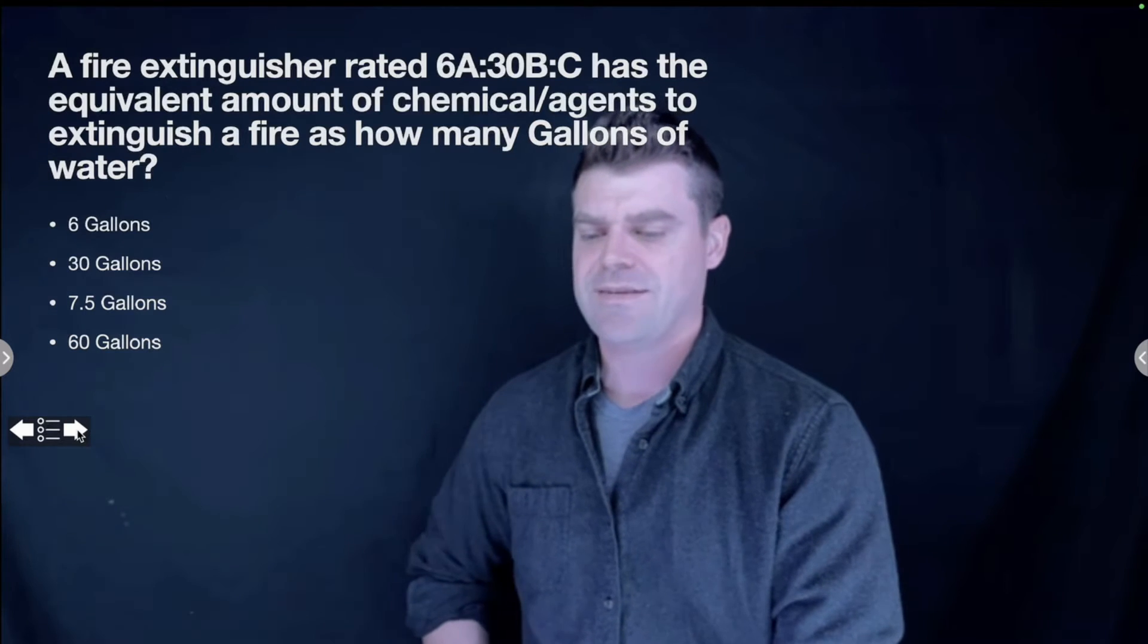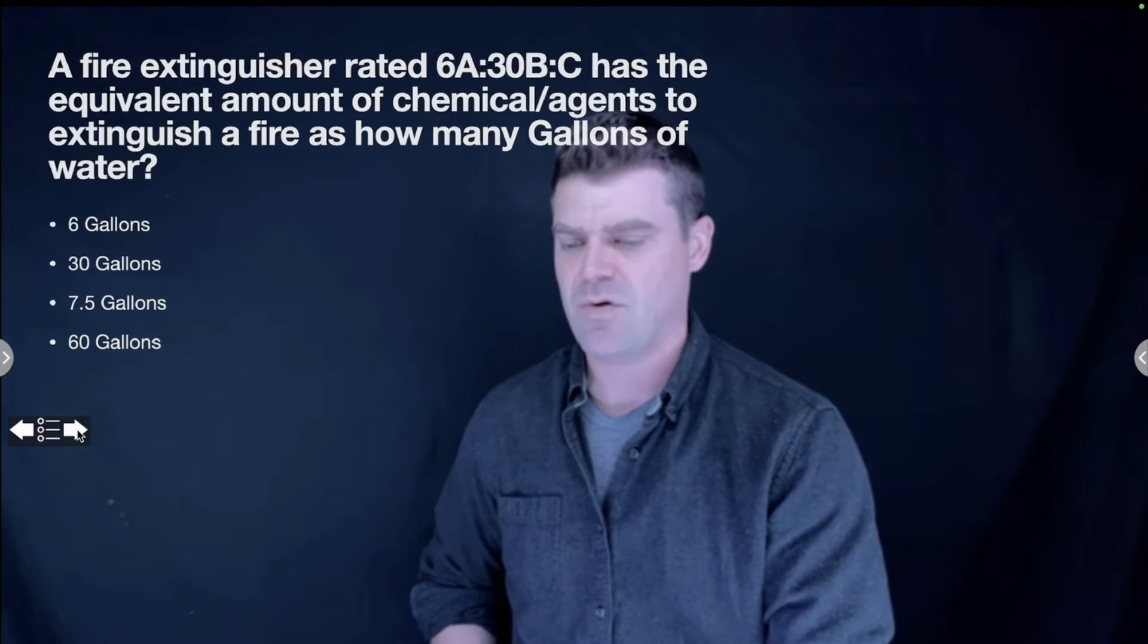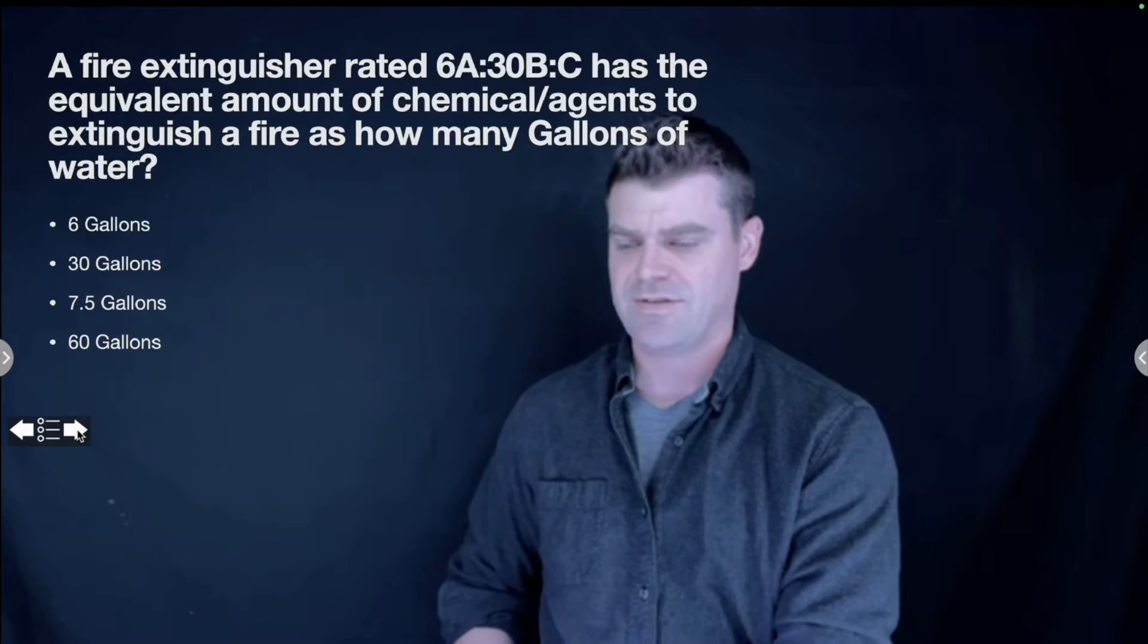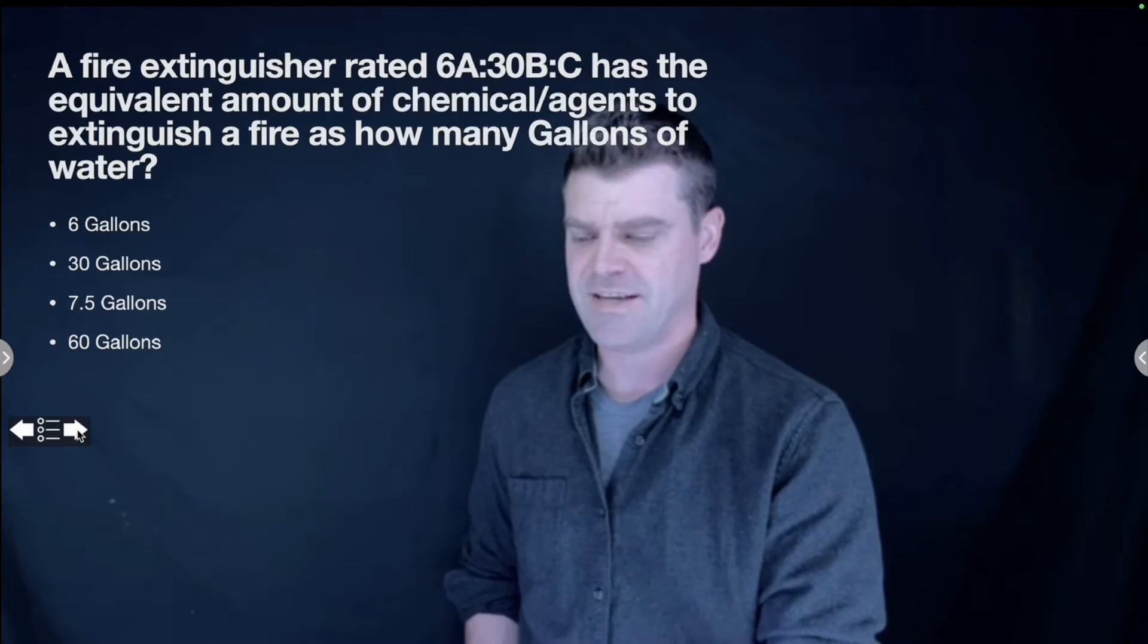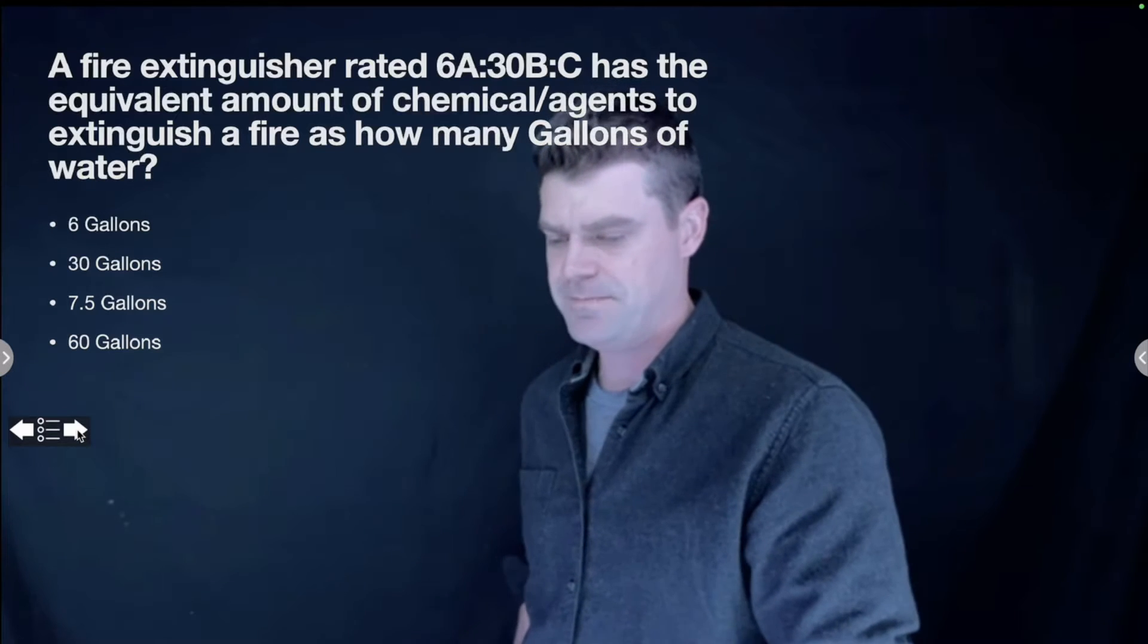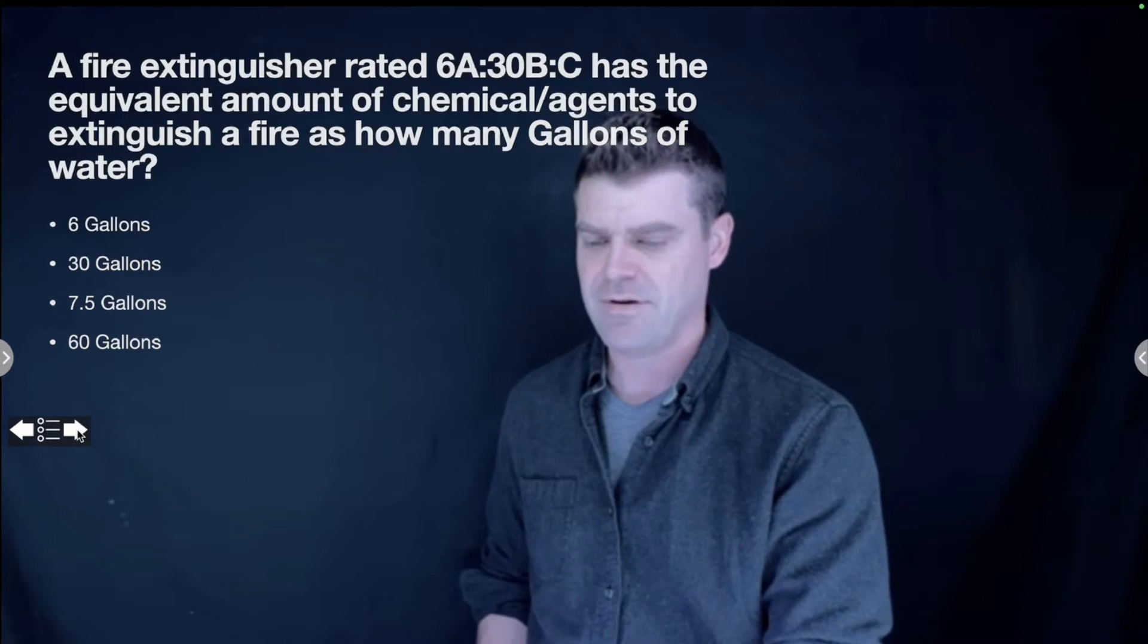A fire extinguisher rated 6A-30B-C has the equivalent amount of chemical agents to extinguish a fire as how many gallons of water? 6, 30, 7.5, or 60?